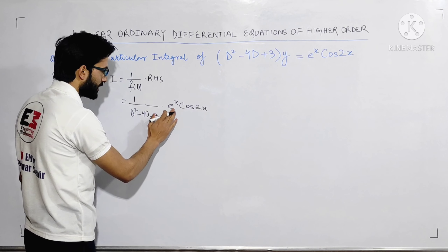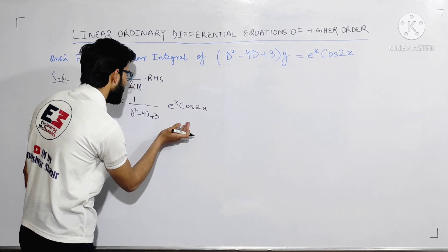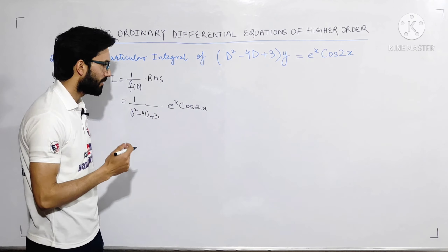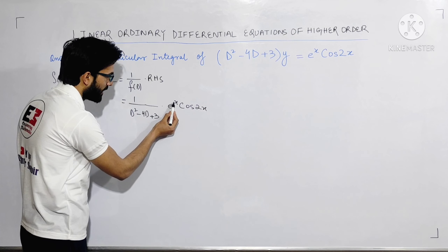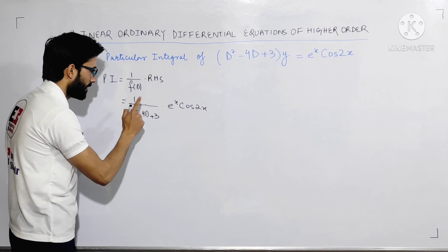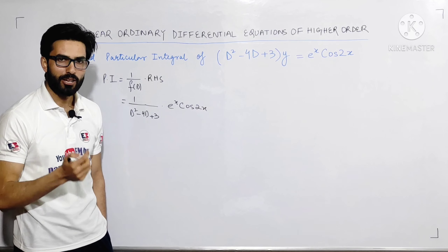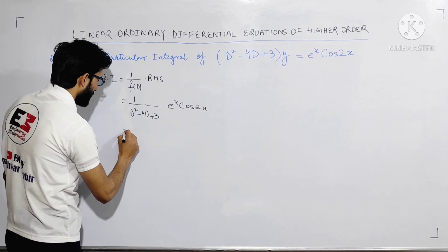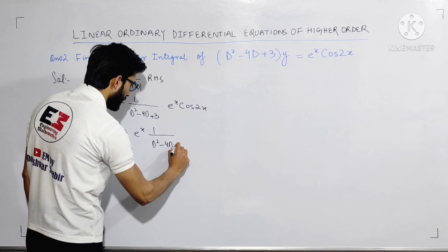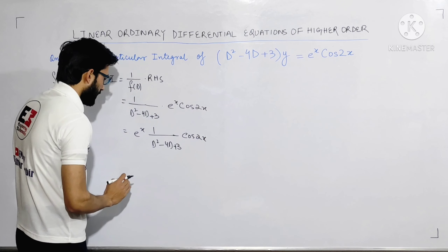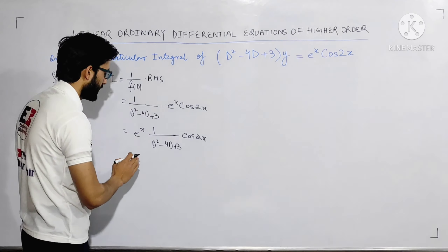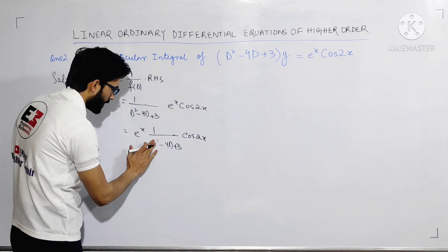We will transfer e^x from the right-hand side to the left-hand side. The rule is: wherever D appears, we replace it with D plus a. Here our e^x means a = 1 (the coefficient of x in the exponent). So I write e^x · [1 / (D²−4D+3)] · cos2x, and then replace every D with (D+1). So D becomes D+1, D² becomes (D+1)², and the term −4D becomes −4(D+1), giving us e^x · 1/[(D+1)²−4(D+1)+3] · cos2x.